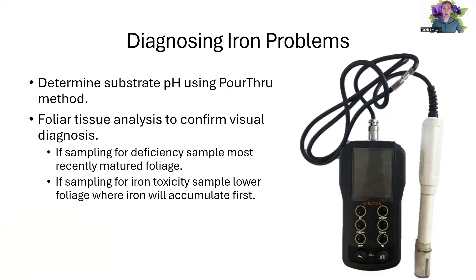Then we need to look at how do you determine if it's an iron problem. The simplest way for in-house is doing a pour-through to determine the pH. You can also look at foliar tissue analysis to confirm the diagnostics. If you're sampling for a deficiency, you're going to want to sample that upper portion of the plant where that deficiency is going to occur. If you're looking for a toxicity to determine which micronutrient it is, you want to sample that lower foliage where that toxicity is going to occur. So matching diagnostics with the sampling location is very important to getting an accurate reading to diagnose the problem.